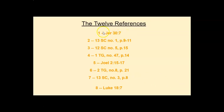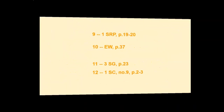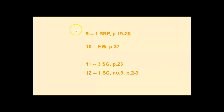On those 12 references we have references one through eight listed in that chart, and we're going to go over each one. Number nine is the one we're not sure about — '1 SRP' — it could be Shepherd's Rod Pocket Edition, or possibly Spirit of Prophecy. If one of the brethren can let us know what that means, we would appreciate it. We'll cover numbers 10, 11, and 12 as well, with the exception of number nine.